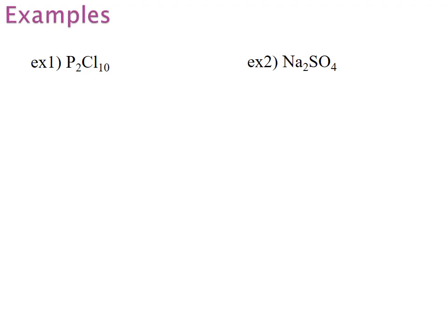Here are our examples — this is the way I want you to complete the assignment. First, we'll write down what elements are present in the formula. I have P and I have Cl. I know the C and l are together because the l is lowercase and it cannot be by itself, so it belongs to the C. So P: there are 2 of them, so I have 2 Ps. Cl: there are 10 of them, so I have 10 Cls.